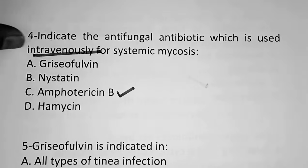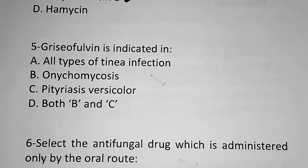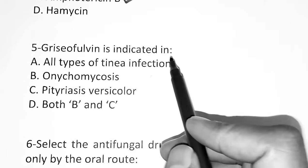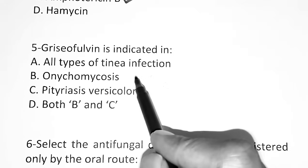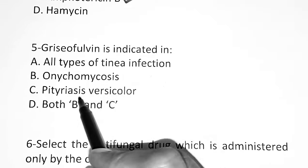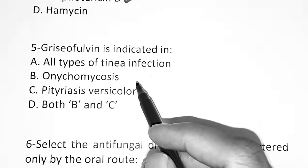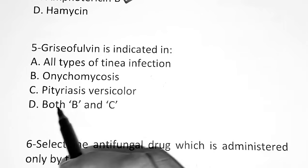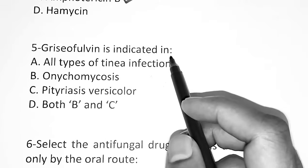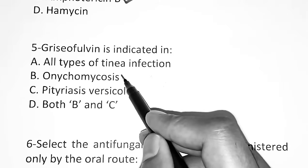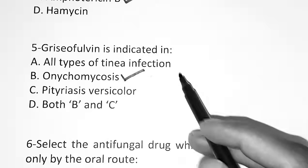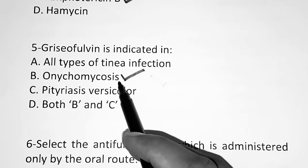Question number 5: Griseofulvin is indicated in — Option A, all types of tinea infection. Option B, onychomycosis. Option C, pityriasis versicolor. Option D, both B and C. The correct answer for this question is Option B, onychomycosis. Griseofulvin is indicated in the case of onychomycosis.